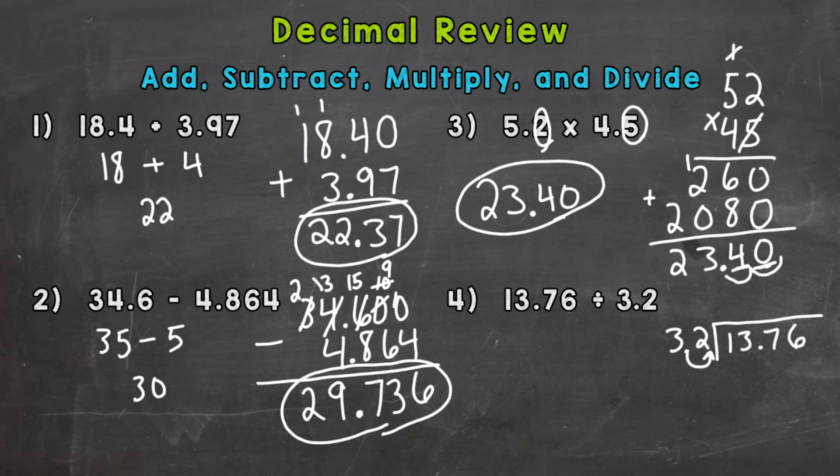Now whatever you do to the outside, you have to do to the inside. Everything needs to stay balanced. So we moved it once to the right on the outside. So we need to move it once to the right on the inside. Now we can rewrite our problem. So we have 32 as our divisor. And we have 137.6. Now that the divisor is whole, we bring this decimal straight up. That's where it's going to be placed in the answer.